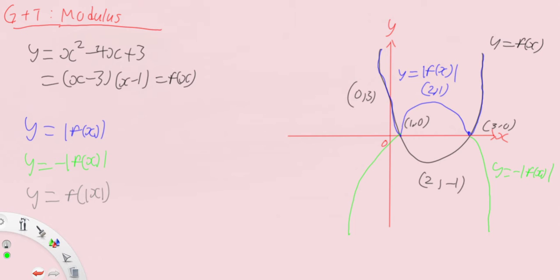Now for f(mod x) — same idea, but now it's applied to your input. Your input is now mod x, which means it's always positive. So we just take away all the values on the negative side — we delete that portion and keep the portion on the right, then copy and paste it by reflecting about the y-axis.